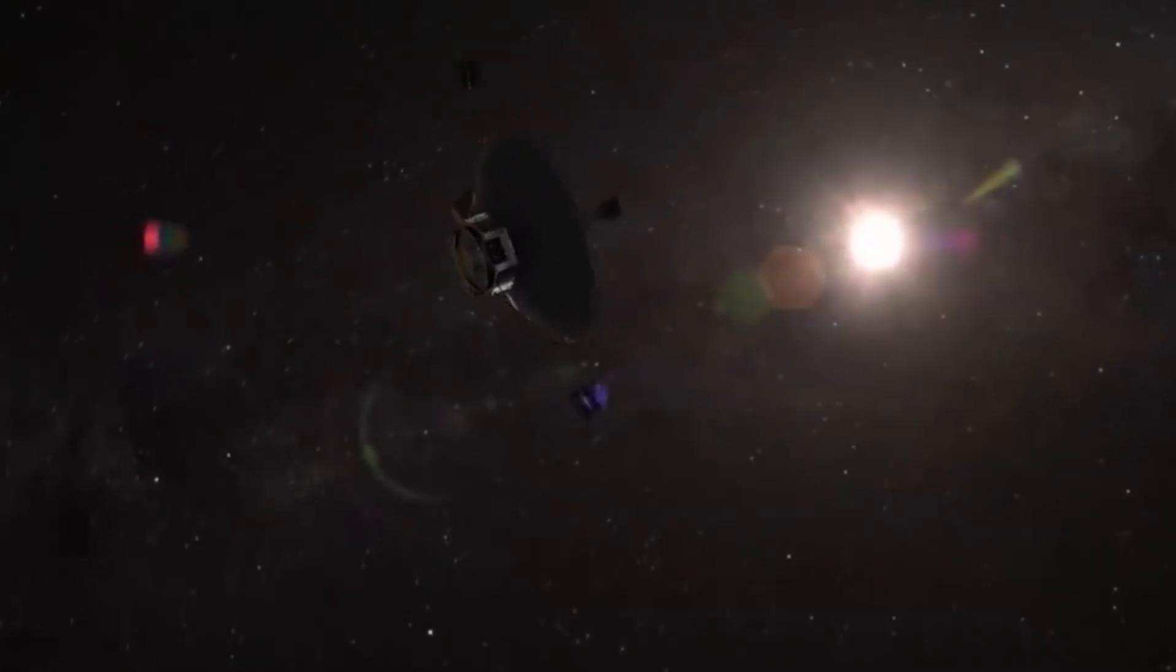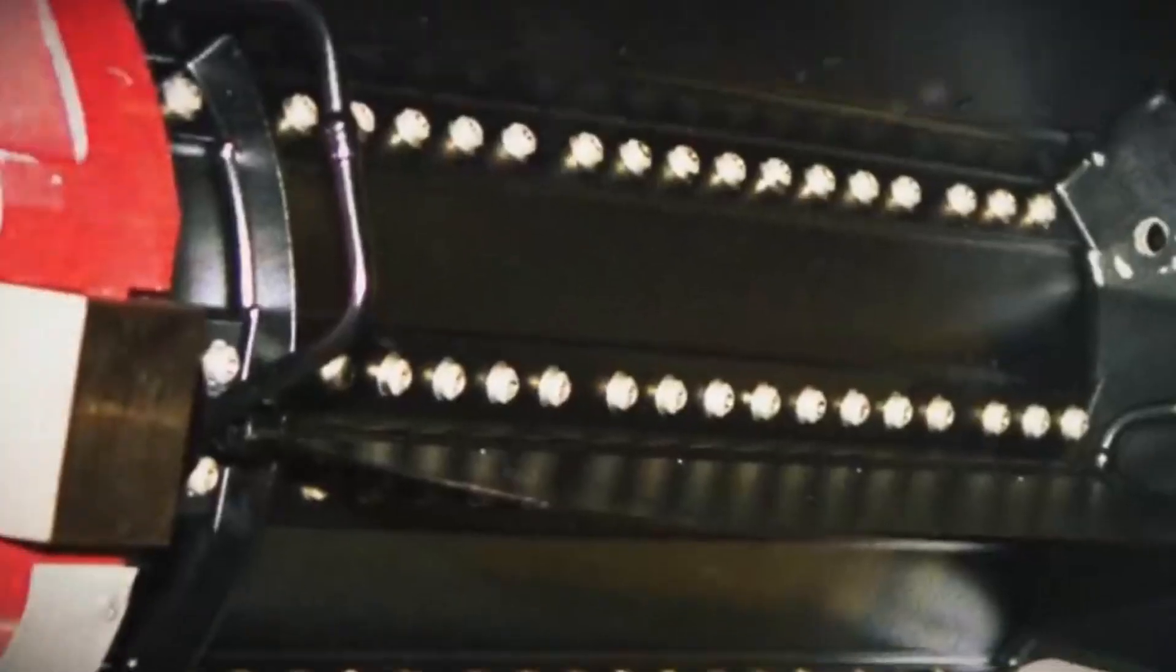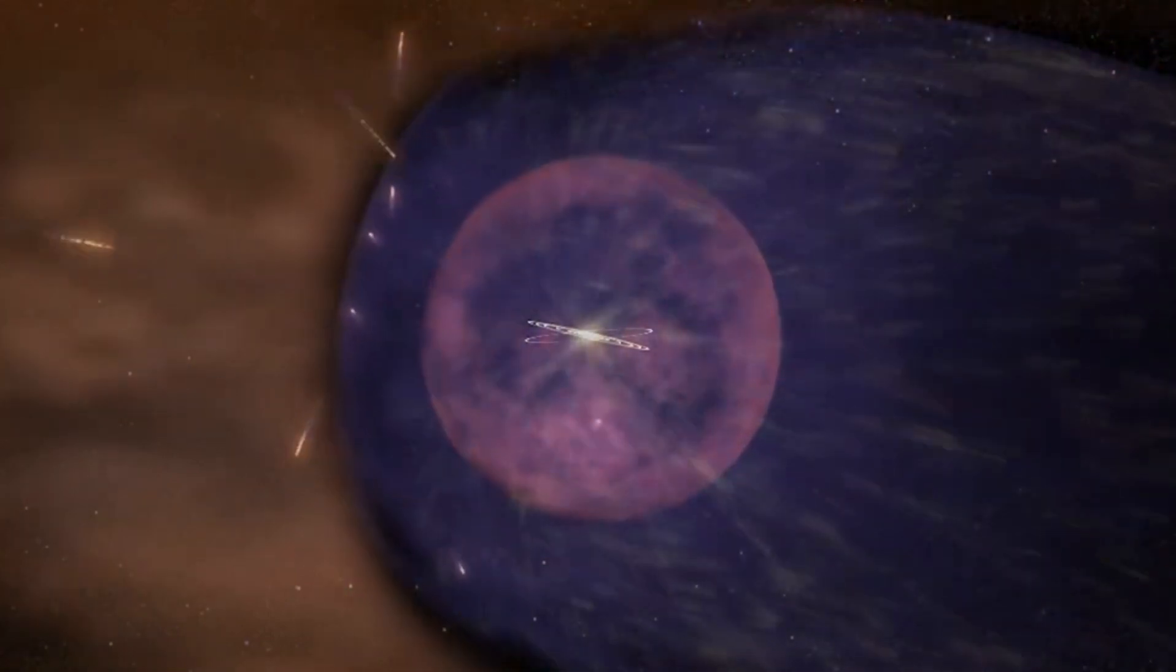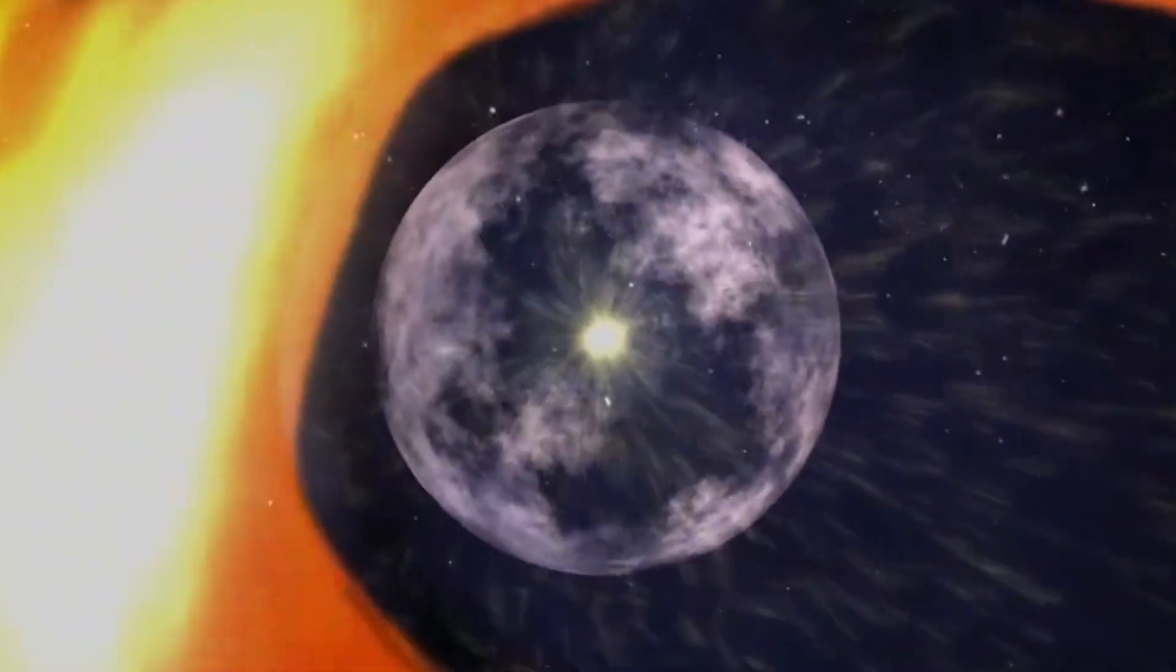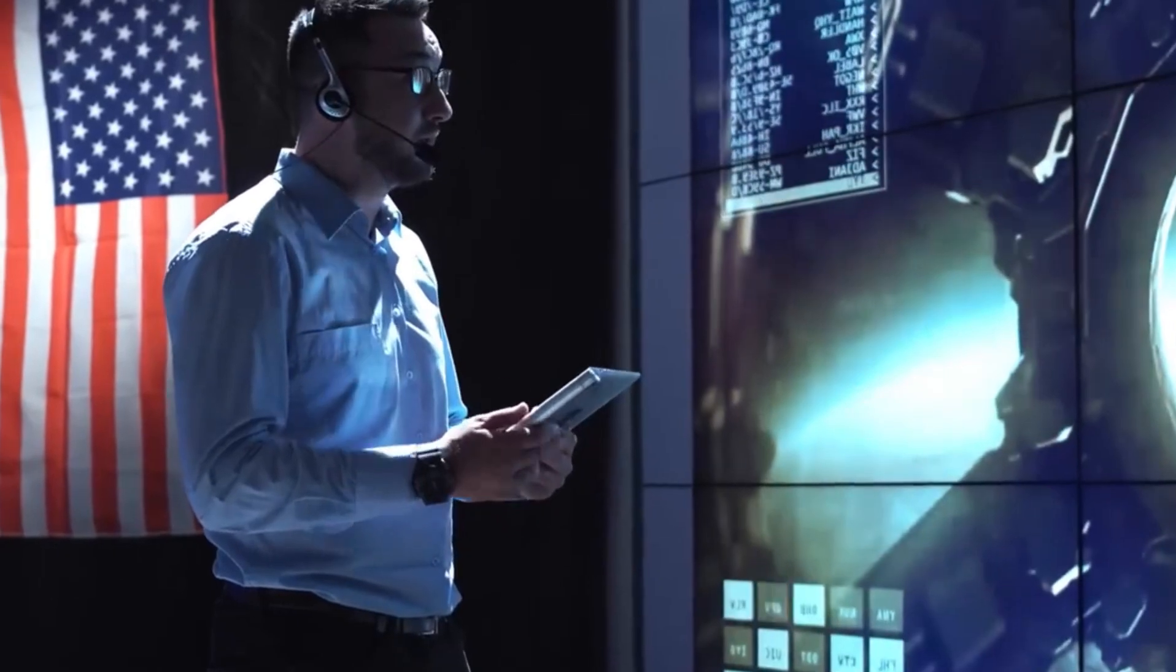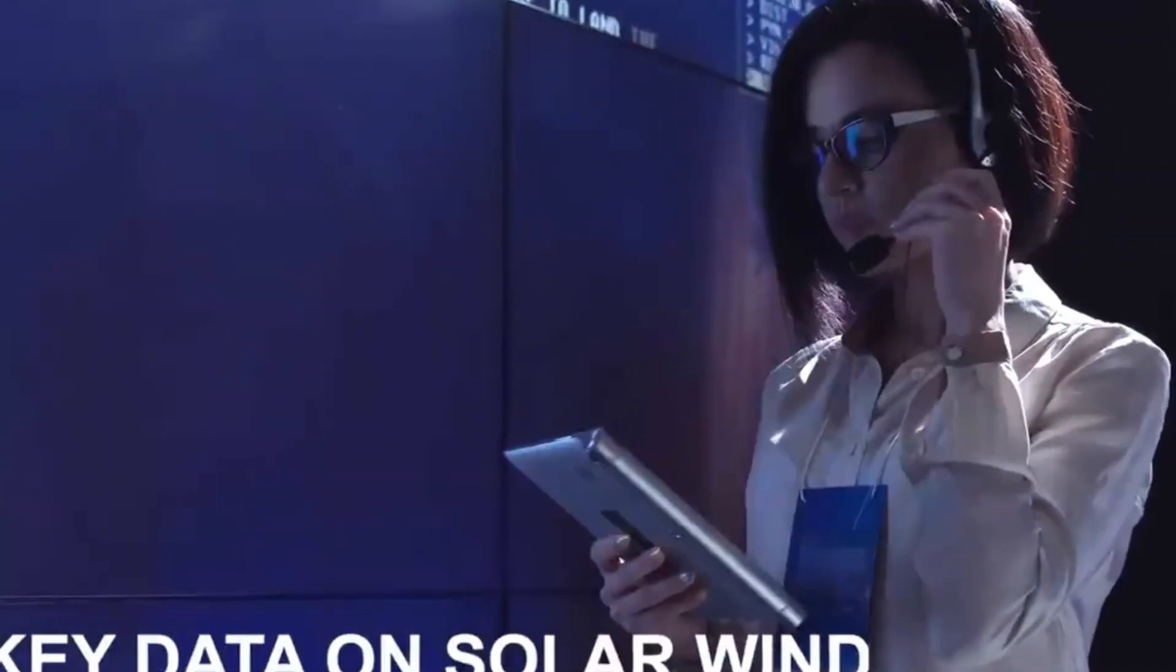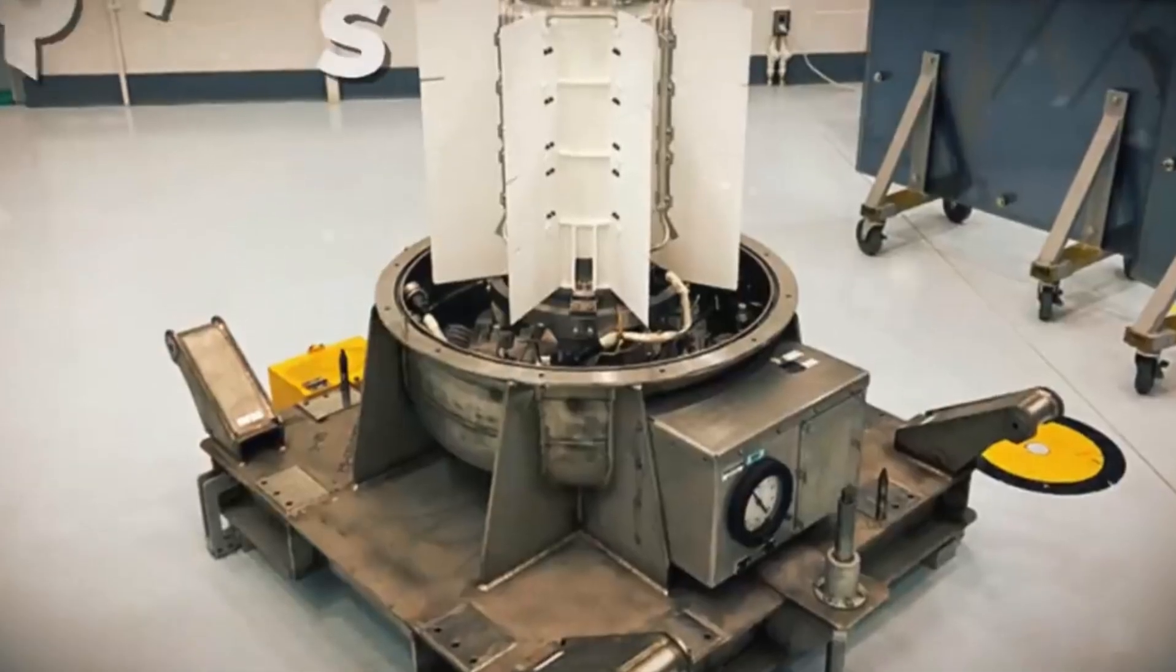As the RTGs continue to decay, the power available to the Voyagers diminishes. NASA engineers have been selectively shutting down non-essential systems to extend the operational life of the spacecraft. It's estimated that by the mid-2020s, the probes will no longer have enough power to transmit data back to Earth. Despite this, the Voyagers will continue their journey through the Milky Way, carrying the golden record as a testament to human curiosity and ingenuity. Their mission has profoundly impacted our understanding of the outer planets and the boundary of our solar system, paving the way for future exploration.